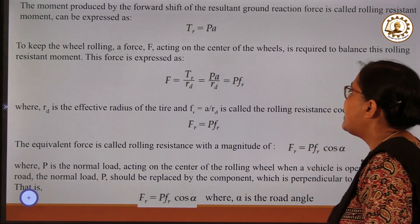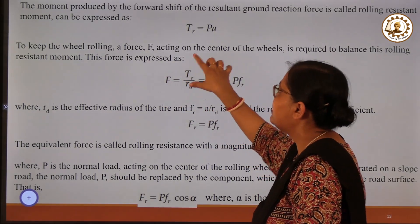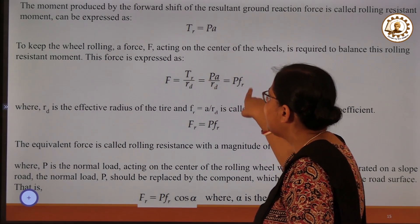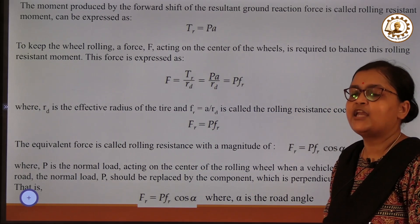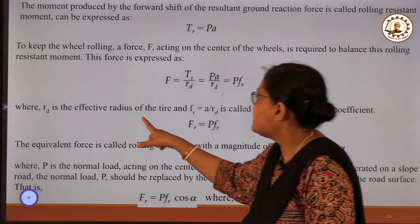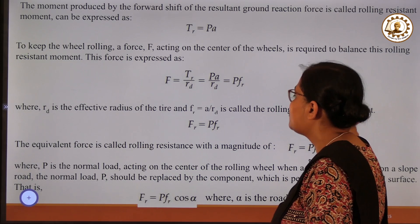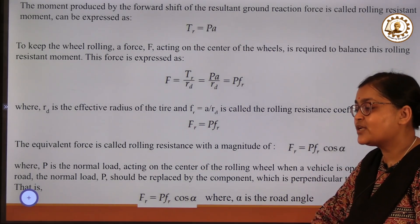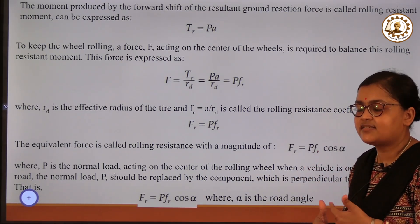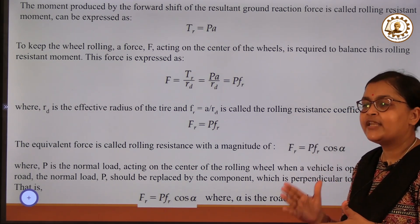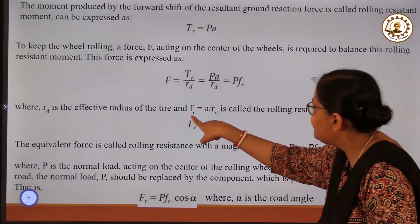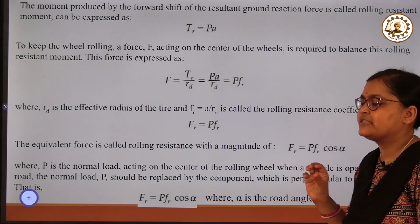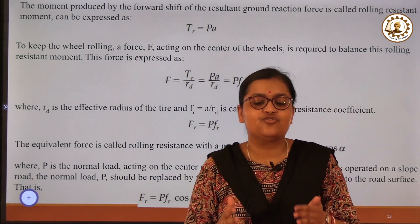To keep the wheel rolling, a force F acting on the center of the wheel is required to balance the rolling resistance moment. This is given by F = PA / RD, where RD is the effective radius of the tire, and FR = A / RD is known as the rolling resistance coefficient. This analysis applies when the vehicle is moving on a smooth road. For a vehicle moving uphill at road angle α, the expression becomes FR = PFR · cos α.